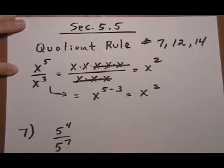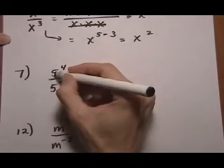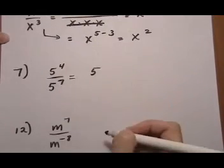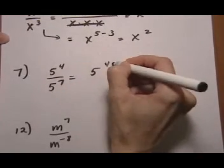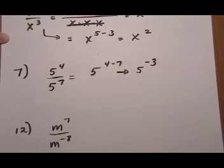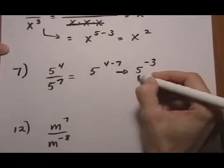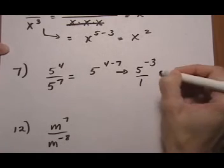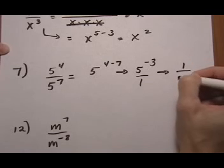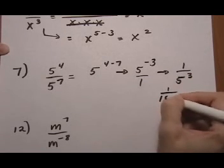So when we have number seven, five to the fourth over five to the seven, what we're going to do is keep the base and do four minus seven. That gives us five to the minus three. In final answers, with any kind of exponent problems, you never want to leave a negative exponent for the final answer. So we need to now shift this. Think of it as over one. Shift it down because it has a negative exponent. One over five cubed, and that would be one over one twenty-five.